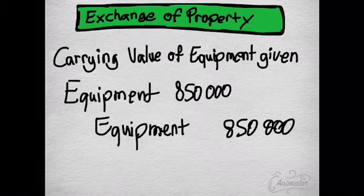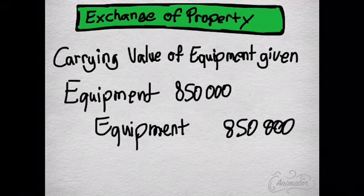Notice that when it comes to exchange of property, we use gain — not share premium — because we're not issuing shares. That's it for the day, accounting folks. If you have any questions, leave them in the comment section below, and I'll see you in the next video.